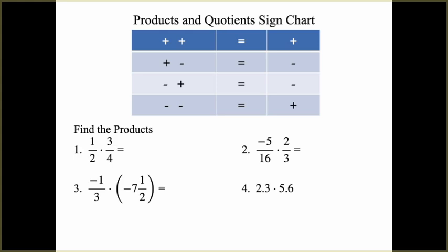With today's lesson, we're looking at products and quotients of fractional numbers — multiplying and dividing fractions and decimals. Here we have the sign chart we used back when we did integers. If you have two of the same signs, a positive times a positive makes a positive, and a negative times a negative is a positive — same signs give a positive result. Opposite signs give a negative result.